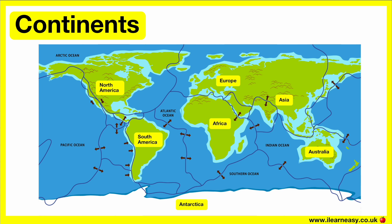A continent is one of Earth's seven main divisions of land. When we look at a globe, continents are the easiest thing to spot as they are large, solid areas of land.